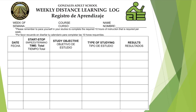The weekly distance learning log. You will use this document to record how many hours and how much time you are spending on each objective, as well as the type of studying — such as using USA Learns, Burlington, or other online resources. You will also be sharing the results, such as what you learned during the time you spent studying for the citizenship test. You will be submitting this on a weekly basis to your instructor.